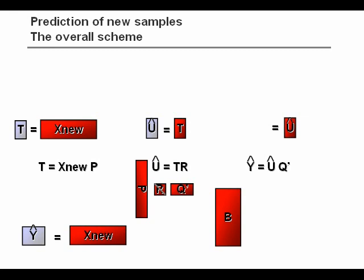Then we get a B matrix, which we will call the regression coefficients. And now it holds that when we predict new samples, we can simply take our new X data, multiply by the regression coefficients, and then we get our Y prediction.